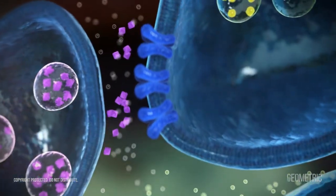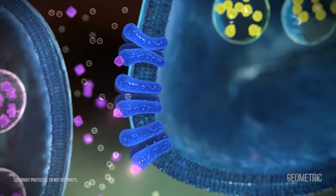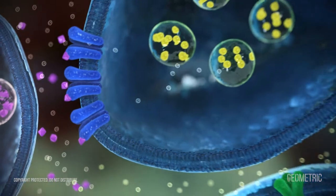GABA can decrease glutamate release when it binds to GABA-B receptors on the presynaptic terminals.